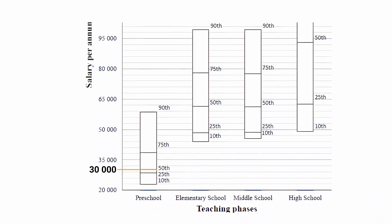For a preschool teacher, the annual salary per annum can be estimated to be about 50 000 US dollars. For an elementary school teacher, the annual salary per annum can be estimated to be about 61 000 US dollars. We can now calculate the monthly salary of each teacher in South African rands and find the difference between these two salaries.